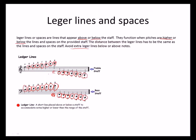Let's recap the definition of a ledger line. A ledger line is a short line placed above or below a staff to accommodate notes that are higher or lower than the range of the staff.